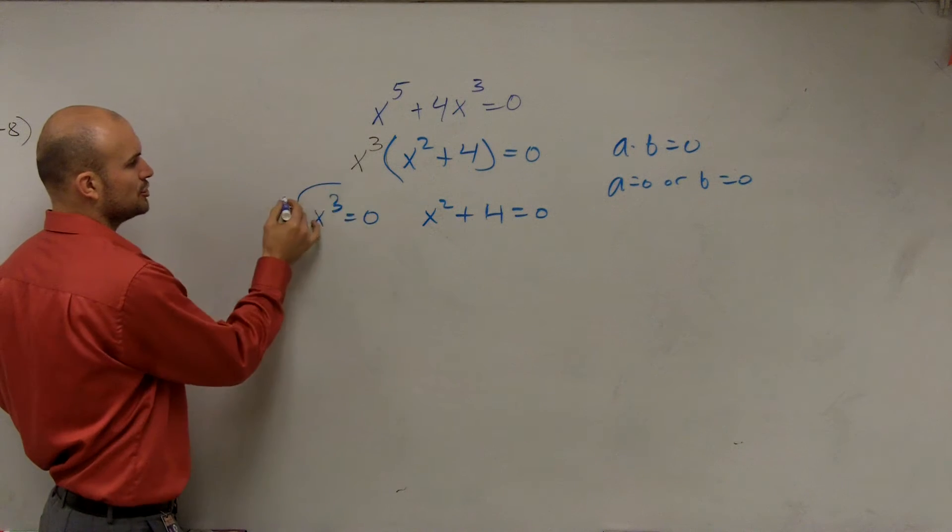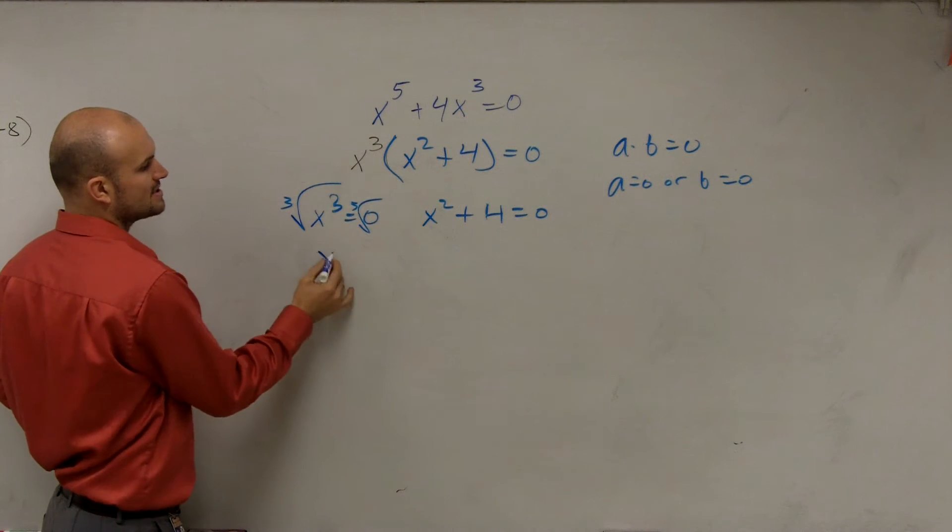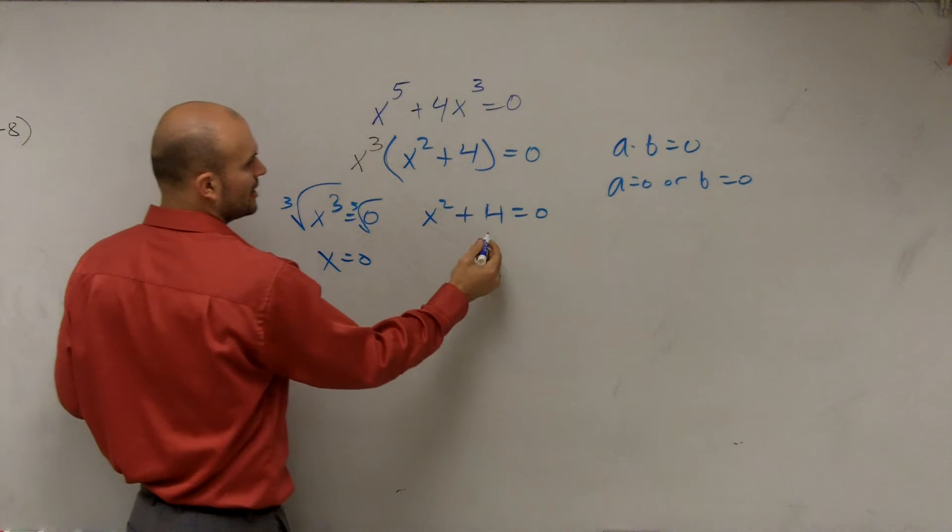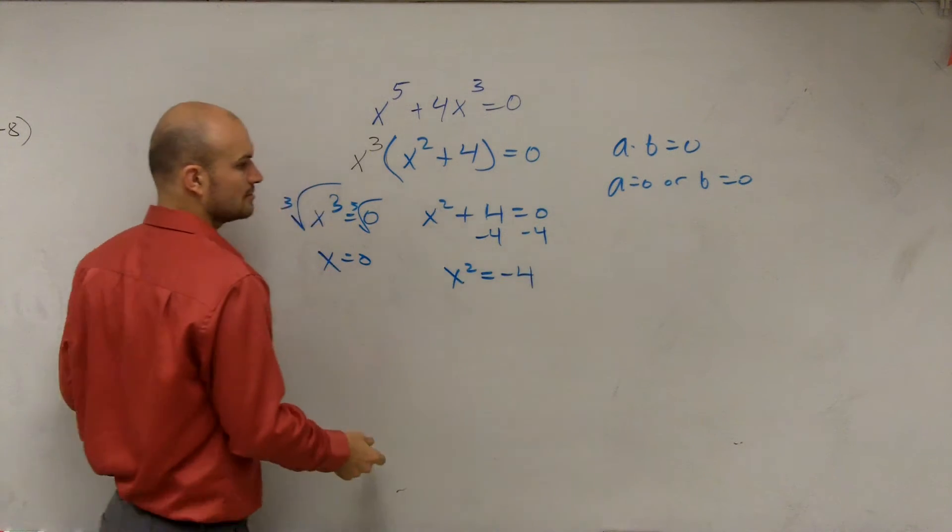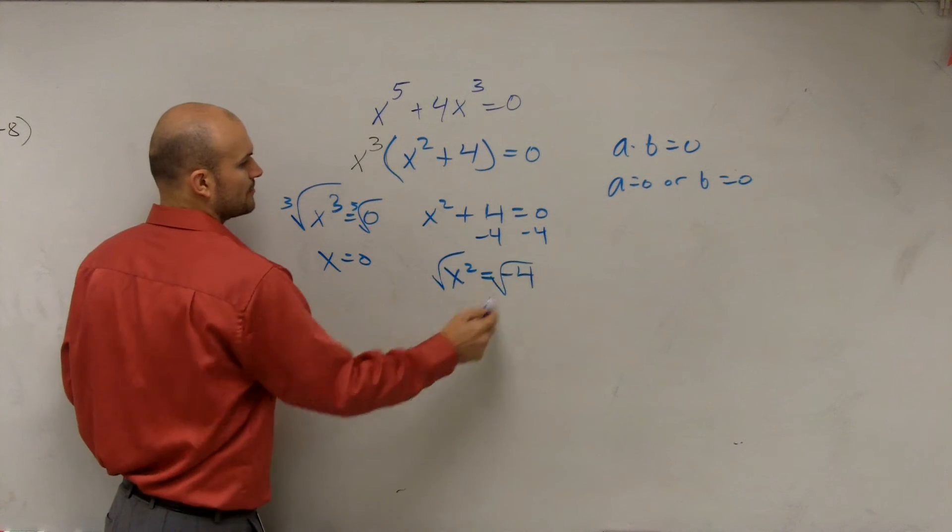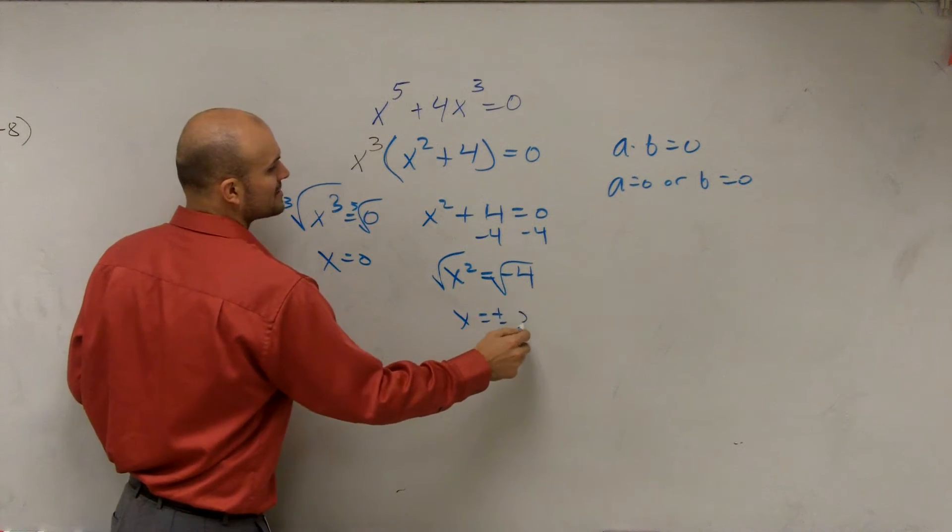So to solve for x, we need to take the cube root. And you could say x equals 0. So here, subtract 4, x squared equals negative 4, right? Square root, x equals plus or minus 2i.